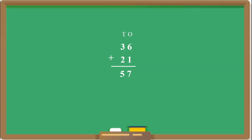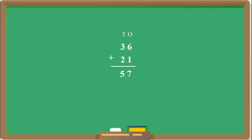Children, before this we added 45 plus 22 and got the answer 67. And we just added 36 plus 21 and got the answer 57. This is simple two-digit addition, which you can do easily. It is called addition without regrouping.